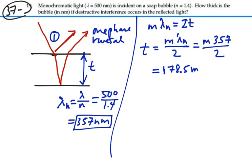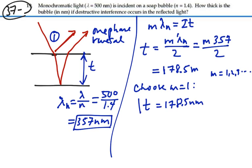So we can have various thicknesses where M is an integer, one, two, three, and so forth. So if we want the smallest thickness possible, we'll just choose M to equal one in this case. So our thickness in this case would be 178.5 nanometers, and that will be the thickness of the film that will cause destructive interference because of that one phase reversal at the first interface.